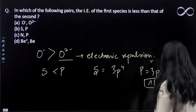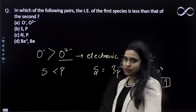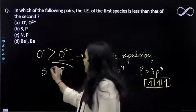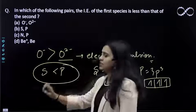So, since it is a half-filled subshell, it will have more difficulty in removing the electron. Therefore, S has lower ionization energy than P.